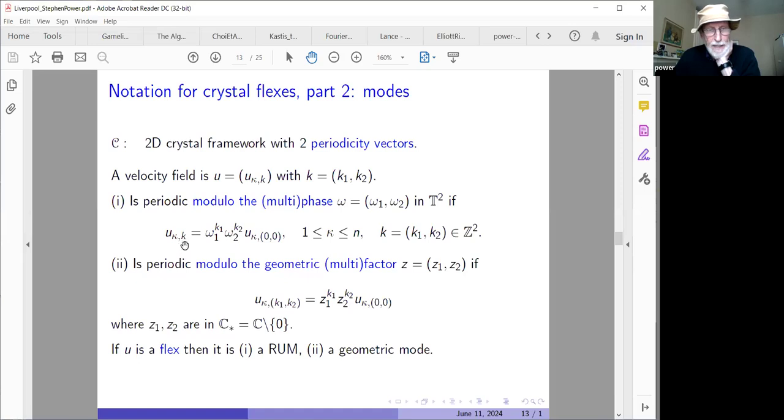We say that u is periodic modulo the multiphase omega_1 omega_2 in the two torus. So these are just unimodular complex numbers functions of modulus one. If when I go from one building block to the next, there's a change of phase. So this is shown in this equation. The velocity in the kappa k block is determined by the corresponding joint in the base block. u_kappa is the velocity. This velocity here, u_kappa_0,0 is the velocity of the kappa joint in the base block. And in the kth building block, this will appear with this multiplicative factor, which is just a complex number. Then completely analogous if I replace that unimodular complex number by general complex number, which is non zero, then I have this more geometric multifactor as governing how the flex is determined by the flex in the base block.